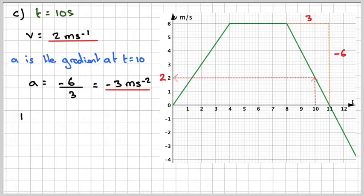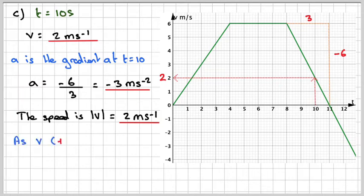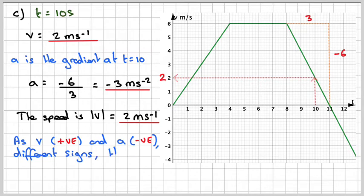The speed will be the absolute value of 2, which is going to be equal to 2 meters per second. Now, the speed here is actually decreasing because we've got positive velocity and negative acceleration, so they act against each other. So as V is positive and A is negative, different signs, therefore the speed is decreasing.